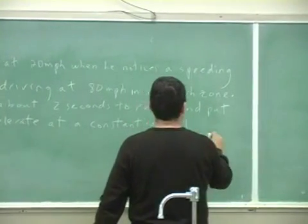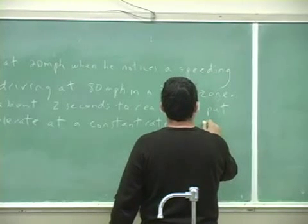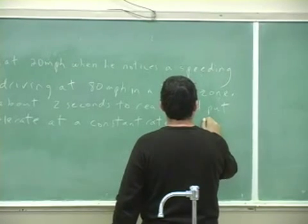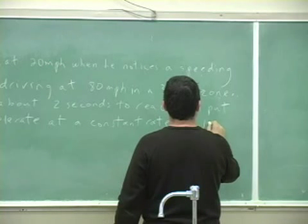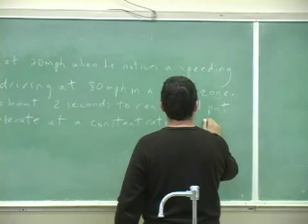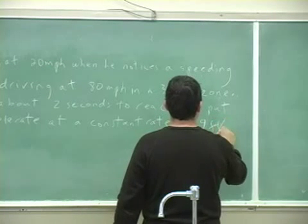At a constant rate of, let's say, the police can accelerate at, this would be quite fast, let's say something like nine feet per second squared.